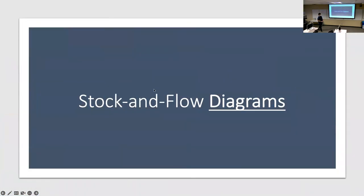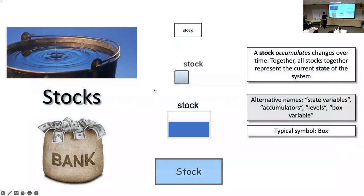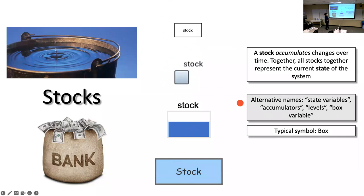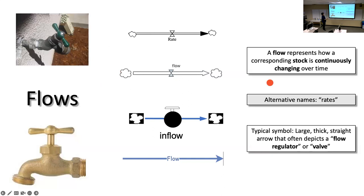That's the toilet example. Now, for stock-and-flow diagrams in general: in any system dynamics modeling tool you'll have stocks — sometimes called state variables, accumulators, levels, or box variables, but most commonly stocks. Here are four different programs: InsightMaker, VENSIM, AnyLogic, and Stella. Four programs, four depictions, but they're generally drawn as boxes. Stella shows boxes partially full; VENSIM plots stock levels over time inside the box.